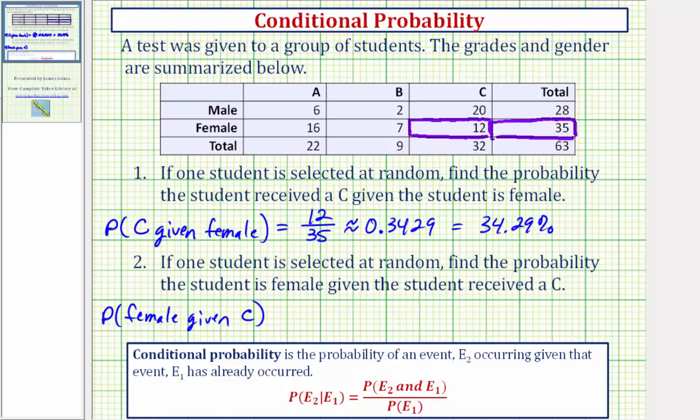Now for number two, we want to find the probability the student selected is female given we know the student received a C. So here we're given we know the student received a C, so going back to the table, let's begin by determining how many students received a C. And again, we can determine the number of C's from this column here. Notice how the total number of C students in the class is 32, which again would be our denominator for the probability because we know it's given the student received a C. And then from the C students, we want to determine how many of them are female.